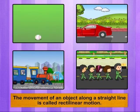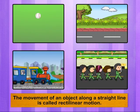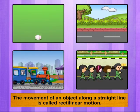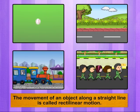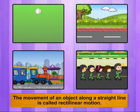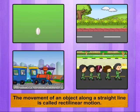Such a motion where an object moves along a straight line is called rectilinear motion.